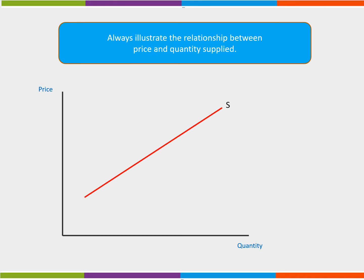To find the quantity supplied for a good or service at any given price, we firstly select the price, P, shown on the y-axis. We then draw a dotted line towards the supply curve. And from the supply curve, we draw a dotted line down towards the x-axis to show quantity, Q.